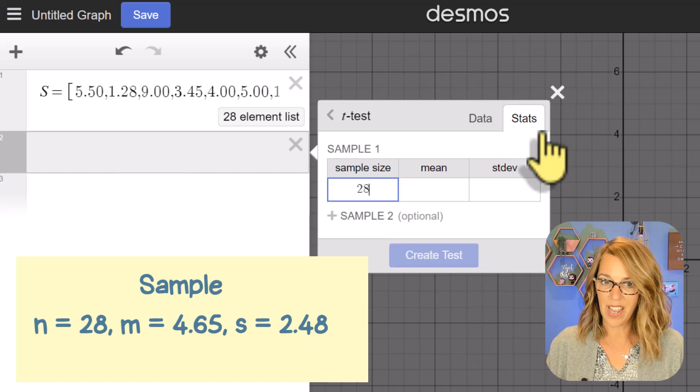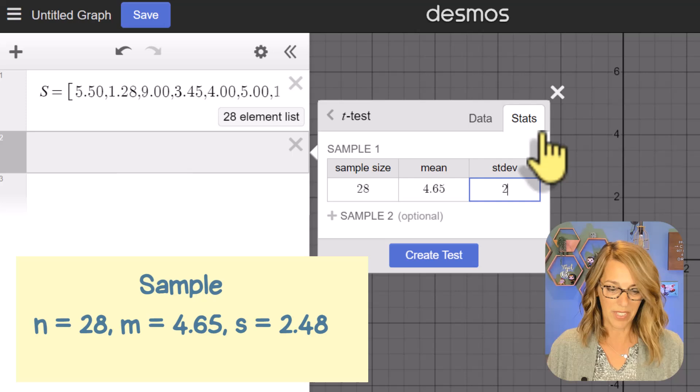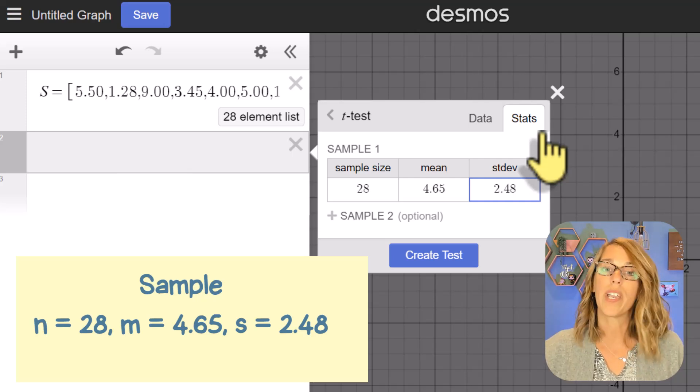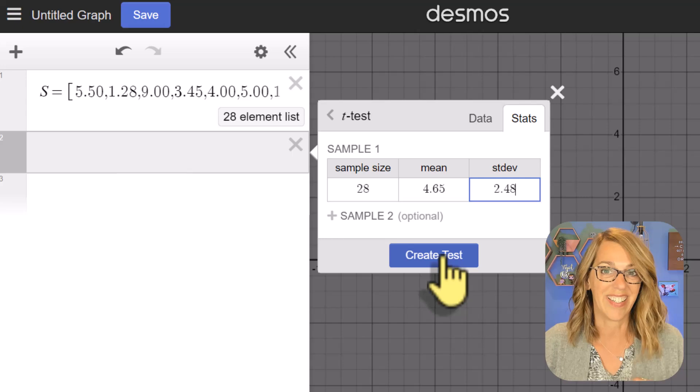The statistics were a sample size of 28. I'm going to tab over to the mean, which was 4.65 and then that sample standard deviation of 2.48. Either way, you would click on create test next,